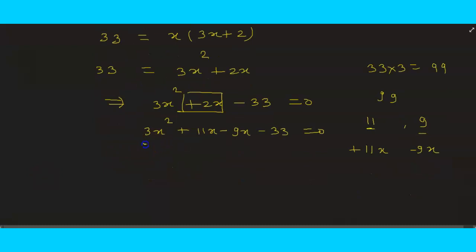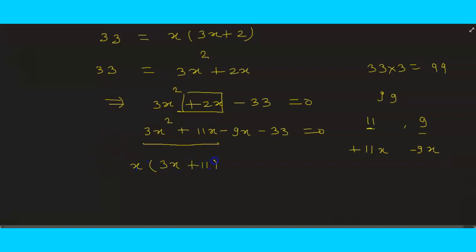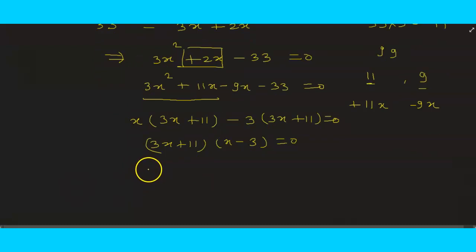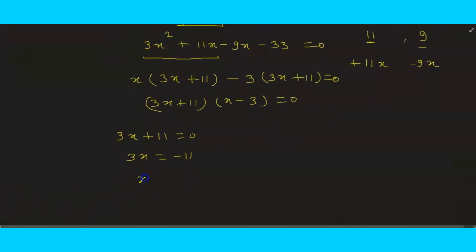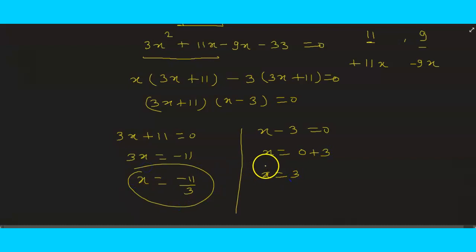So either 3x + 11 = 0, giving x = −11/3, or x − 3 = 0, giving x = 3. Since length and breadth cannot be negative, we take x = 3. Therefore the breadth is 3 units and the length is 3(3) + 2 = 11 units.